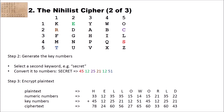In the second step, you generate the key numbers. To do so, you select a second keyword — for instance, 'secret' — and then convert it to numbers using the Polybius square. For example, the S is at row 4, column 5, so we write 45. The E is at 12, the C is at 25, the R is 21, the E again is 12, and the T is 51. So 'secret' converts to the key numbers: 45, 12, 25, 21, 12, 51.